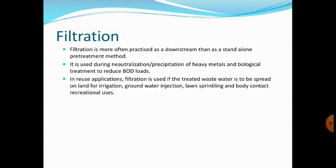Next comes filtration. Filtration of industrial wastewater is more often practiced downstream of other pre-treatment processes than as a standalone pre-treatment method. It is used during neutralization or precipitation of heavy metals and biological treatment to reduce biological oxygen demand loads. It may also be used to remove lime precipitates or phosphates, and as a pre-treatment before discharge to an activated carbon column, or to a dialysis or reverse osmosis unit.